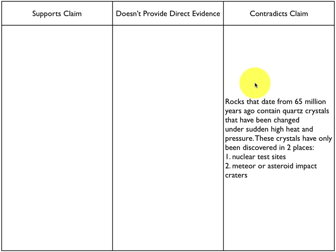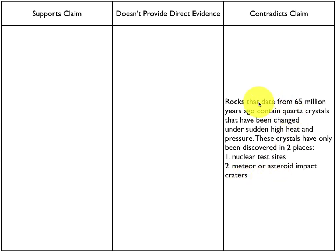What this piece of information actually supports is an alternate claim — that a meteor or asteroid impact might have caused this extinction. That's different from saying the claim about volcanoes is impossible. We make the distinction that supporting one claim is not the same as contradicting another claim, and we're going to see why that's important in just a few minutes. I would actually put this card in the 'doesn't provide direct evidence' column. Once you start revisiting your columns, you might find that there are very few pieces of evidence — probably none — that actually contradict the original volcanic claim.